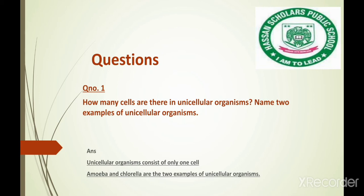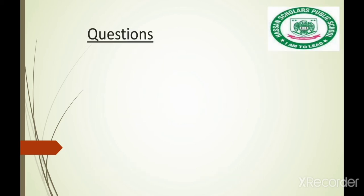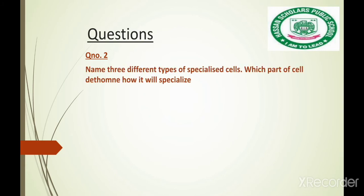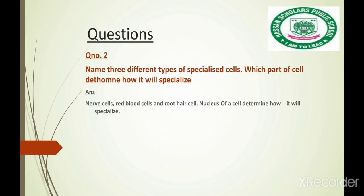That is why we call them unicellular organisms. Now we will talk about Question Number 2: name three different types of specialized cells. Nerve Cells, Red Blood Cells, and Root Hair Cells are the three specialized cells. The nucleus of a cell determines how it will specialize.